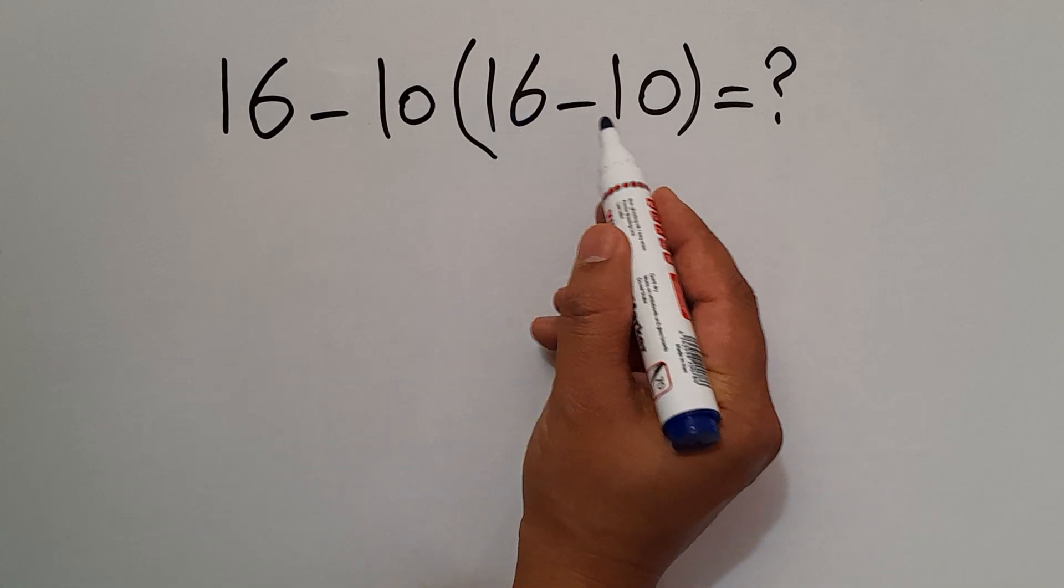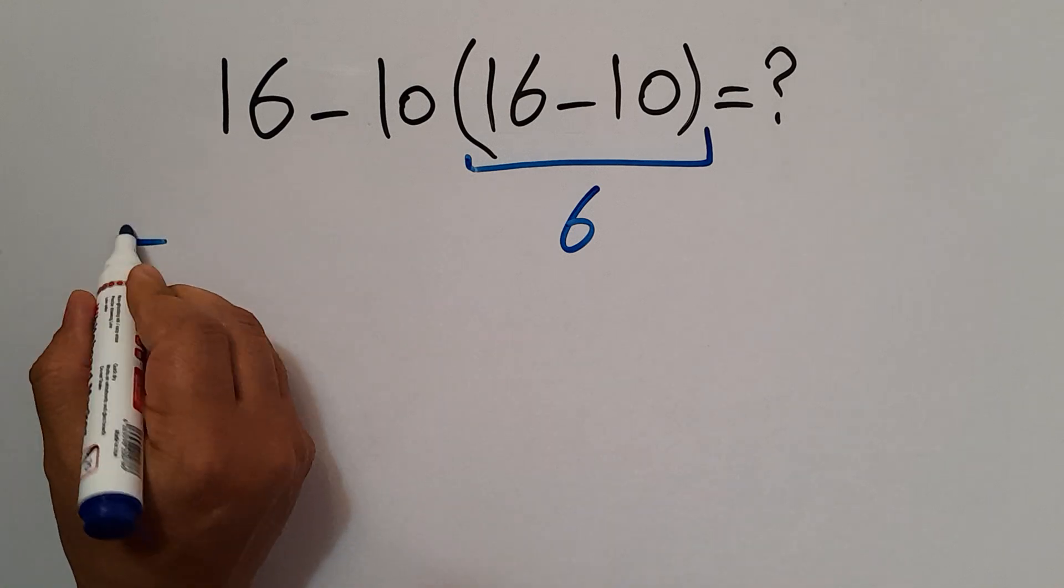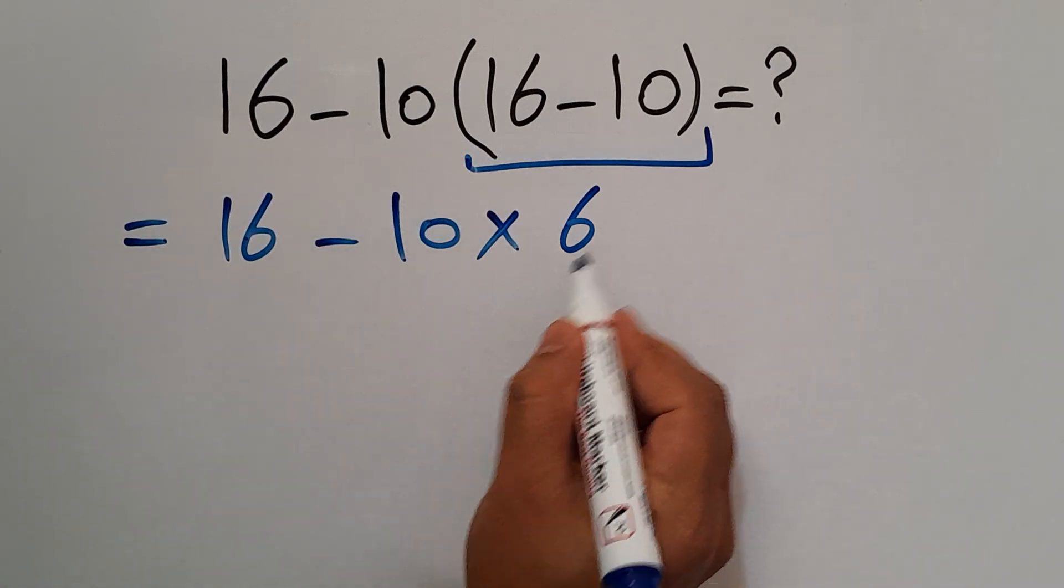16 minus 10 gives us just 6. So we have 16 minus 10 times 6.